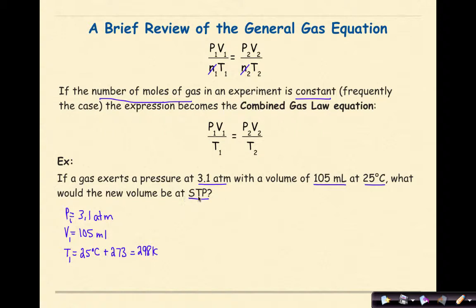They say here that the new conditions are going to be at STP. So that means my P2, and at STP pressure is 1 atm, we've got to stay in the same unit of pressure. We're going to solve for V2, that is going to be my X, and T2 is going to be the temperature at STP, which we know is 273 K. So now I have all my variables except for the one that I'm solving for, which in this case is V2.